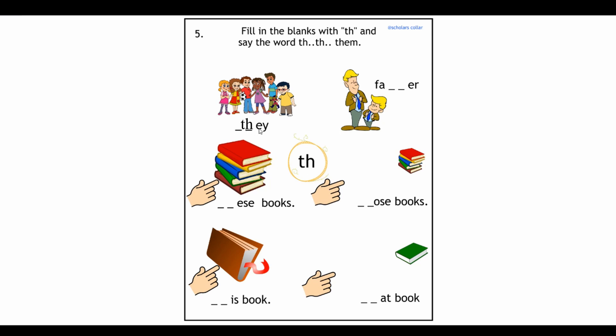So we have they, we have these books, those books, this book, that book. Again we have they, father, these books, those books. Remember we are saying these and those, this and that, because this refers to singular and then we have plural words.